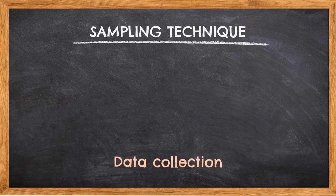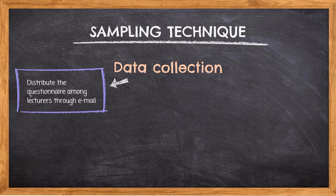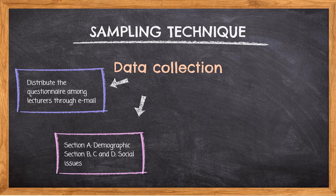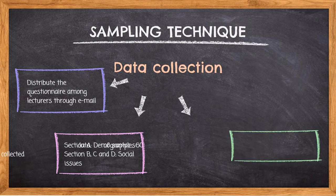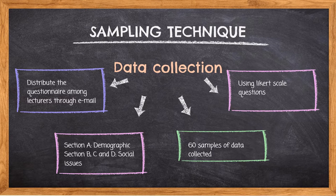Sampling Technique. To get data collection, first we will distribute the questionnaire among lecturers through email. Second, the questionnaire has been divided by four sections which are Section A: Demographic, and Sections B, C, and D: Social Issues. Third, the questionnaire was also distributed to 60 respondents to get data collection. Lastly, we use Likert scale questions to get the answers.